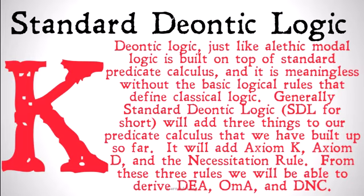From these three rules, we're going to be able to derive the three rules of inference we had: the DEA, the OMA, and the DNC. If you don't know what those are, watch the previous videos on the deontic equivalence axiom, the omissibility of contradictions axiom, and the deontic non-contradiction axiom.